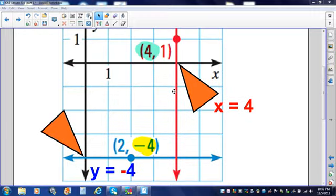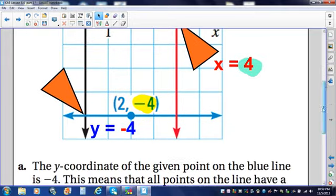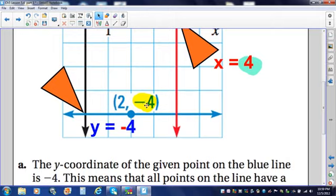One other thing I want to point out. Notice your ordered pair 4 is the x value. Notice that your equation here, x equals 4, because it touches the x-axis at 4. Notice for the blue line your y value is negative 4. In your equation, y equals negative 4, because it touches the y-axis right here at negative 4.